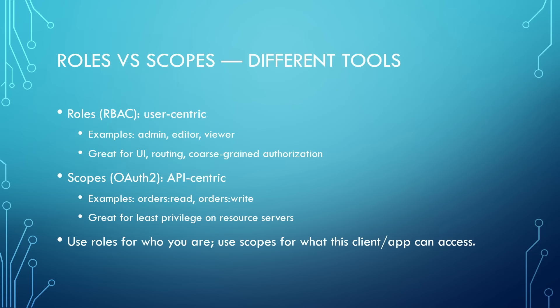Roles are user-centric — admin, editor, viewer — great for UI decisions and coarse access control. Scopes are API-centric — orders:read, orders:write — great for least privilege and resource servers. Think of it this way: roles describe who the user is in your business; scopes define what the client app can do on a specific API.